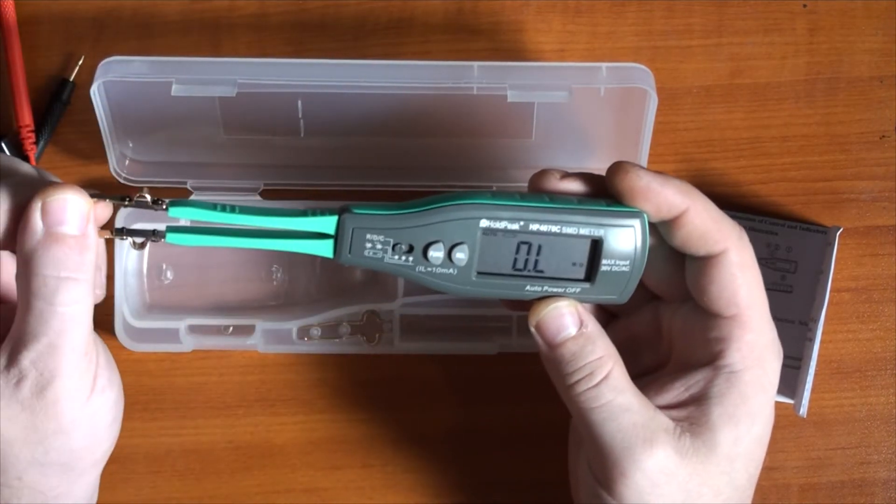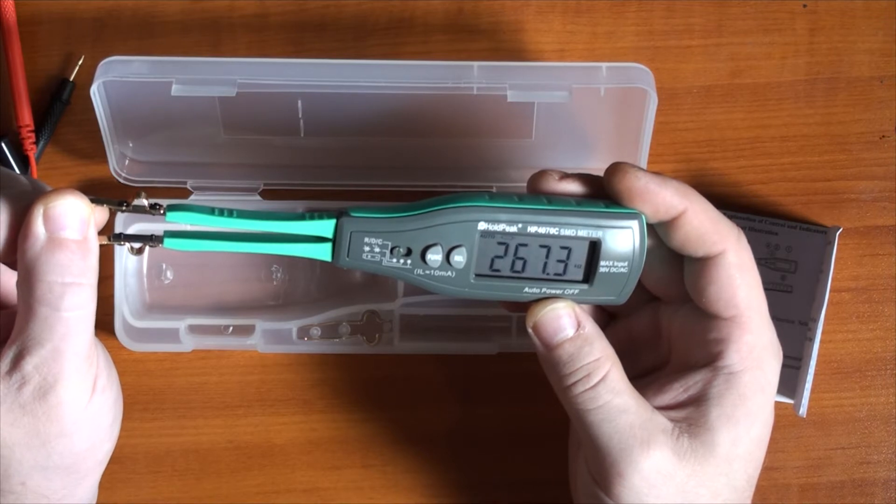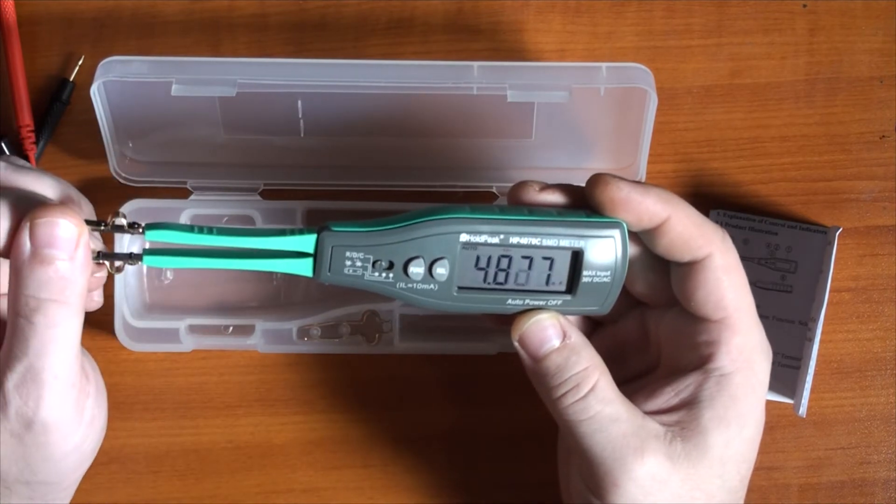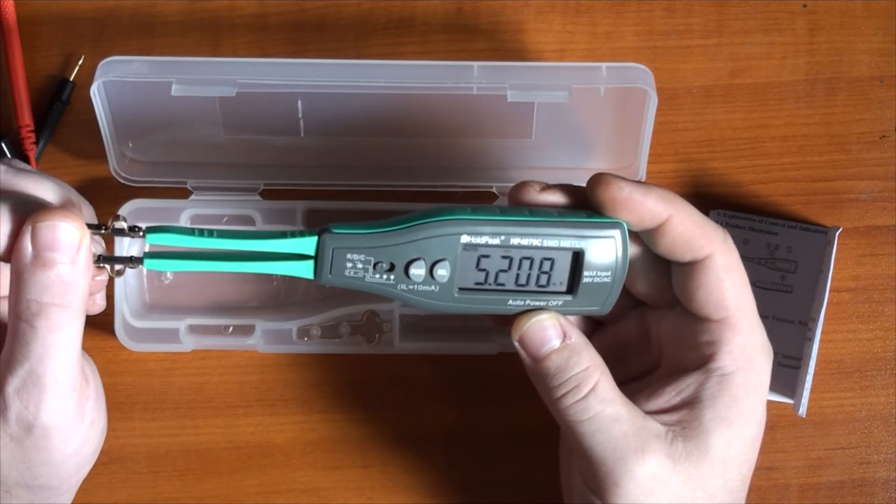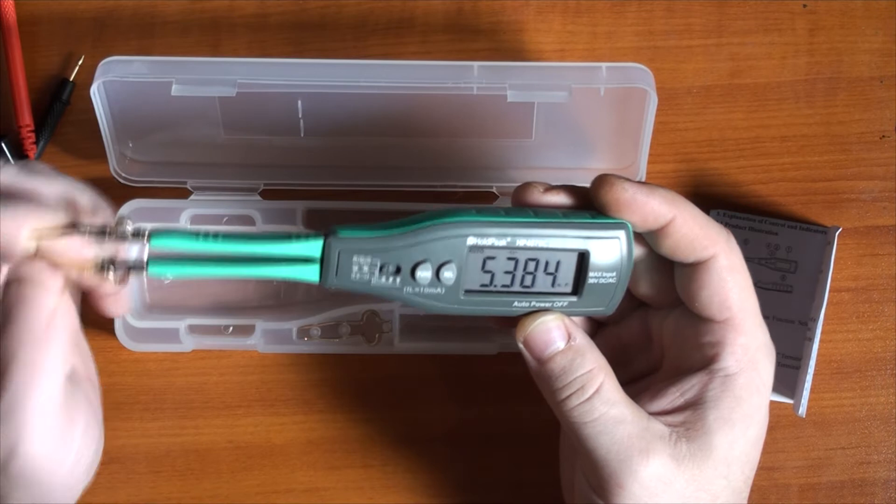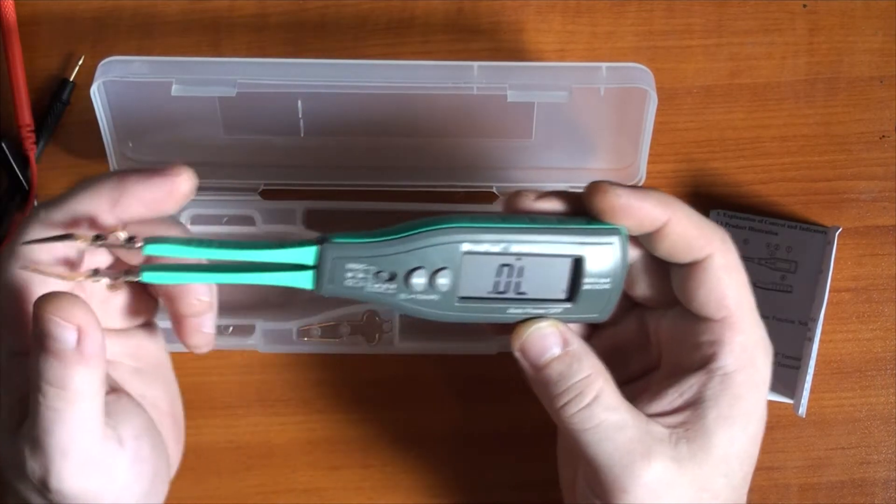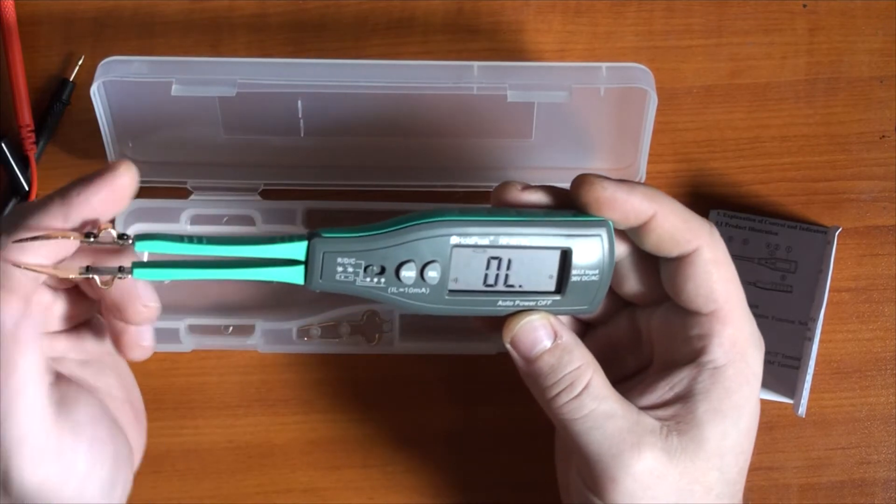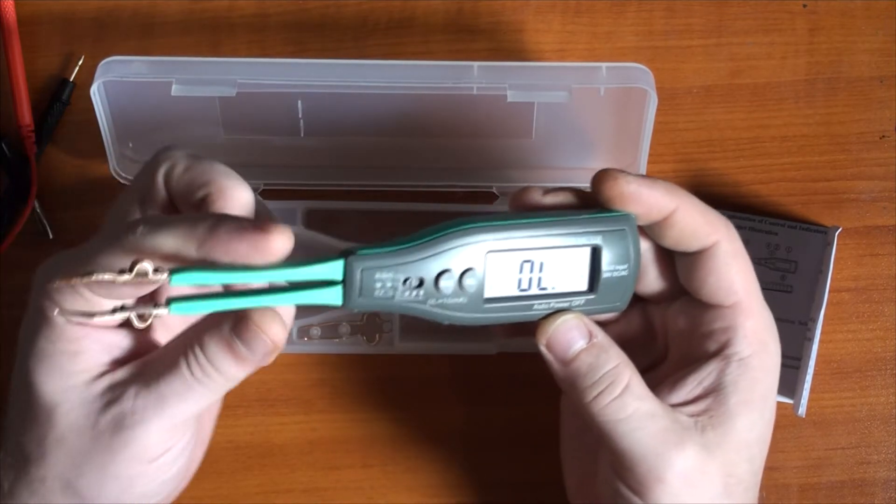It can measure the resistance as you can see. That's the resistance of my fingers. Capacitance, that's again capacitance of my fingers in nanofarads. Diode, so that would be checking for diodes, the resistance plus the buzzer.